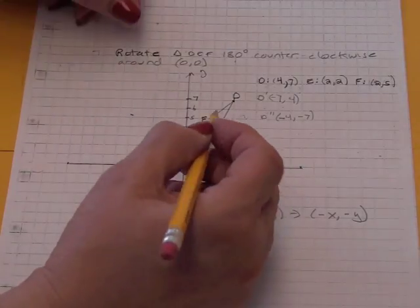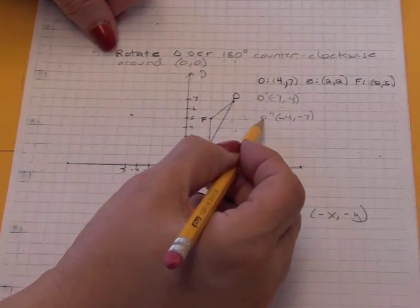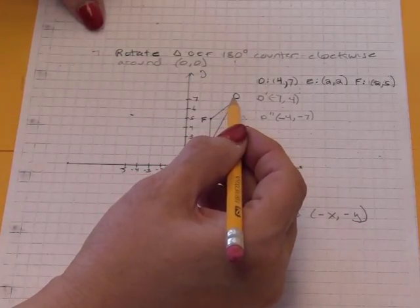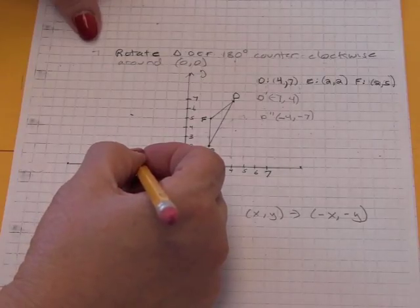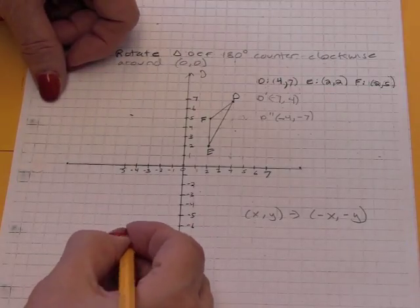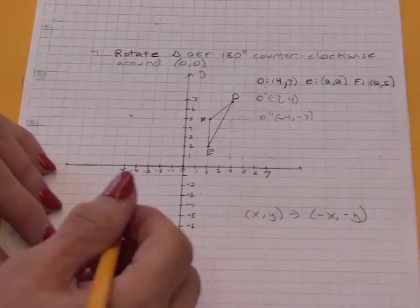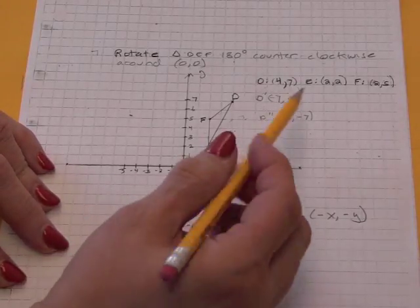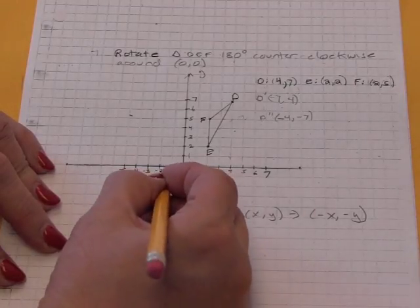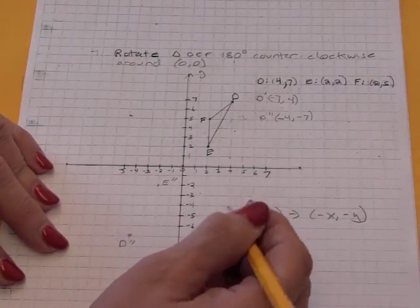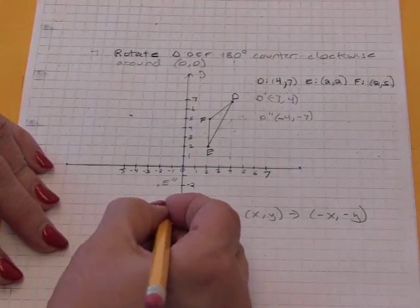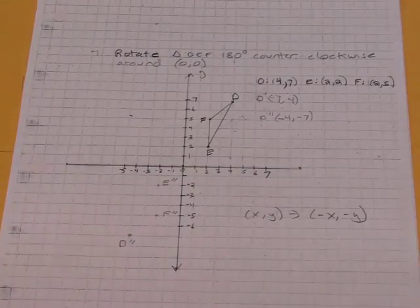So in this case, the image, I'm going to call it D'' because of what we did here. We're just doing one operation. So (4,7) is going to (-4,-7). Somehow D's and P's are mixed up in my mind. And (2,2) is going to go to (-2,-2). (-5). F double prime. And I connect those points.